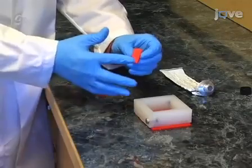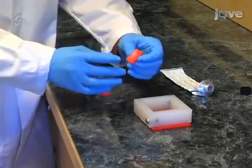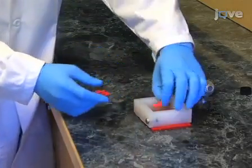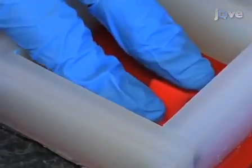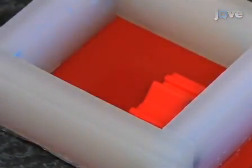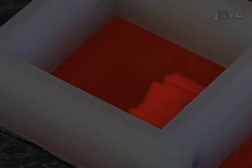Place a small amount of vacuum grease on the lateral side of the solid model of the desired geometry. Press the model into the bottom of the mold form cavity, vacuum grease side down, so that the vacuum grease holds the part in place.